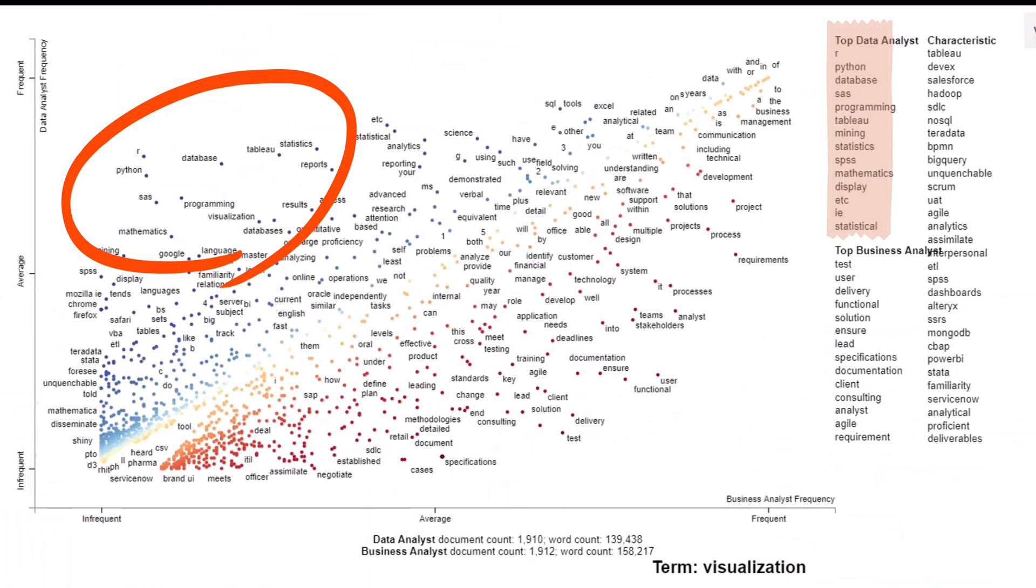The main terms that distinguish data analyst jobs from the business analyst jobs are those such as R, Python, SAS, programming, database, mining, data visualization.